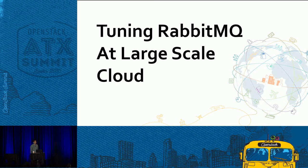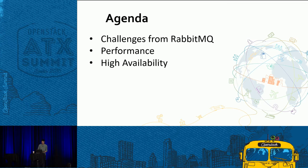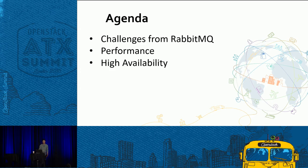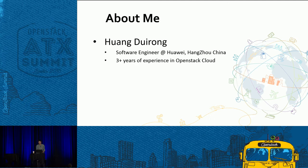All right, thanks for coming out. This is a beginner-level talk on how to tune your RabbitMQ at a large-scale cloud. It's an overview of some of the lessons we've learned deploying OpenStack at Huawei. I'm going to focus mainly on highlighting some of the challenges we had deploying RabbitMQ, show the performance changes that can happen with different deployment models, and highlight some techniques we use to monitor and debug our RabbitMQ environment.